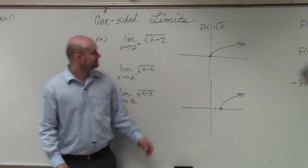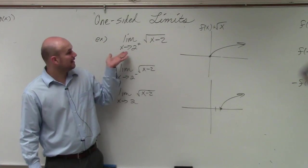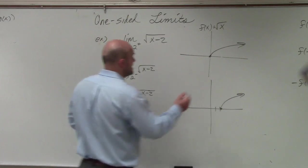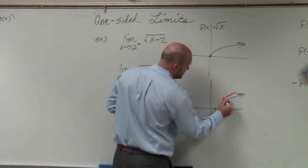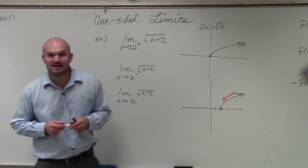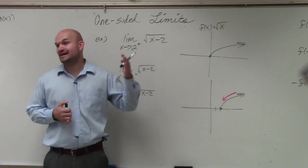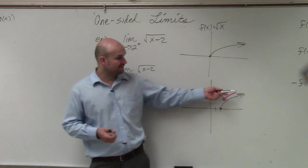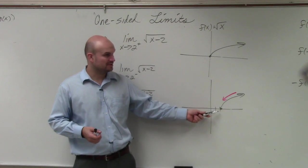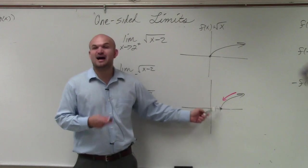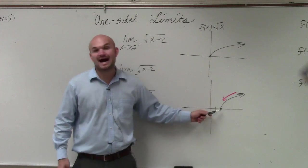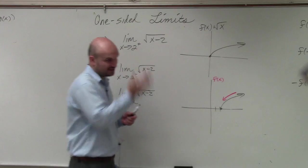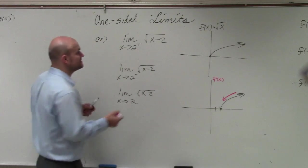So as we approach 2 from the positive — from the right-hand side — what is the f(x) value that I am approaching? I'm going down f(x), right? You're approaching the f(x) value, which in this case is going to be 0.